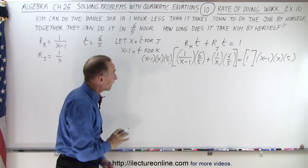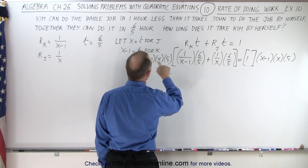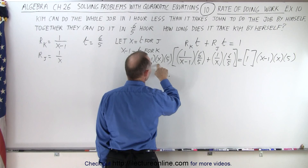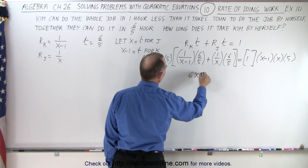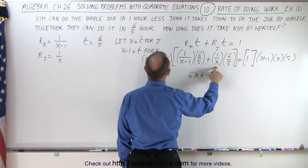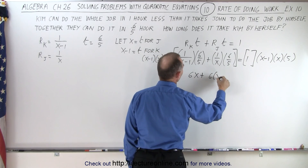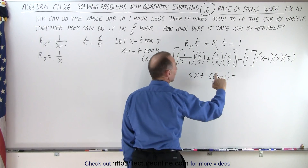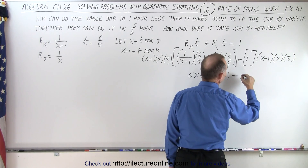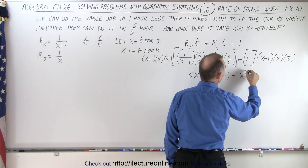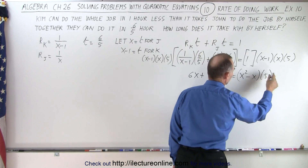Now we go ahead and multiply. Here we cancel out x minus one and five, and multiply times x — x times six gives us 6x. Then we cancel out x and five, and multiply six times x minus one. On the right side we multiply everything together: x times x is x squared, minus x, multiplied times five.